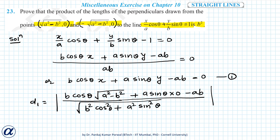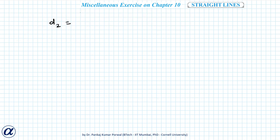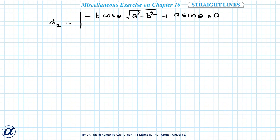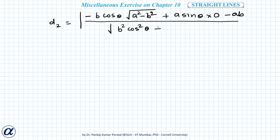In the same way, I can find the perpendicular distance of the second point. So d2 equals the absolute value of b·cosθ·(−√(a²−b²)) + a·sinθ·(0) − ab, divided by √(b²cos²θ + a²sin²θ).